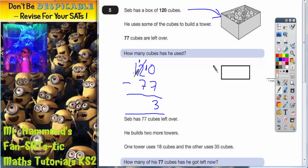1 subtract 7 we can't do again, so we've got to borrow one from this one. So this one is now going to become 0, and the 1 we borrowed goes next to this one here to make 11. So we've got 11 take away 7 and that is 4. So he must have used 43 cubes.